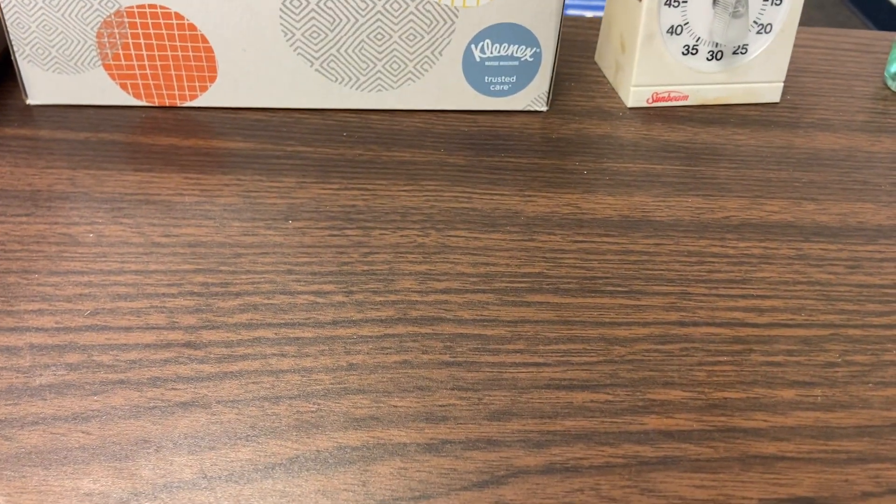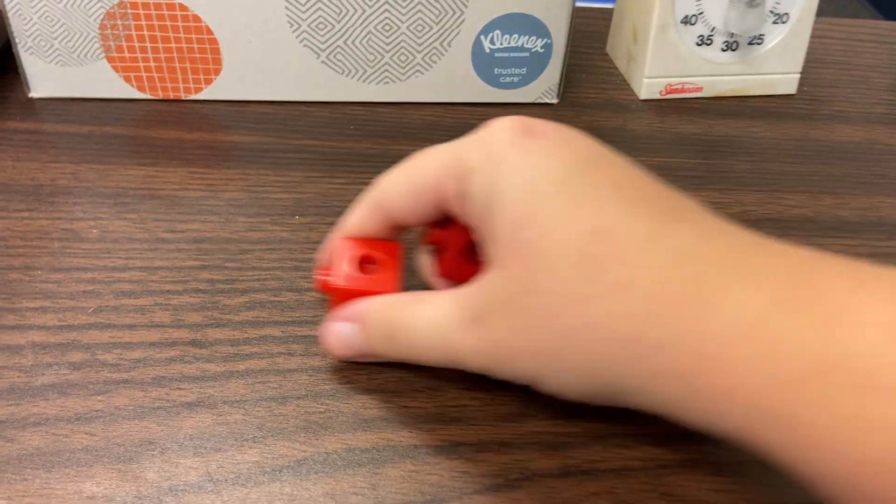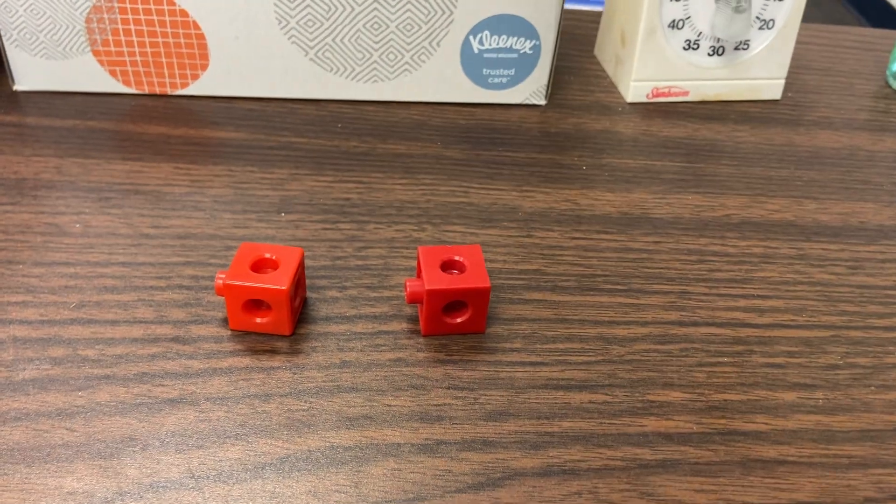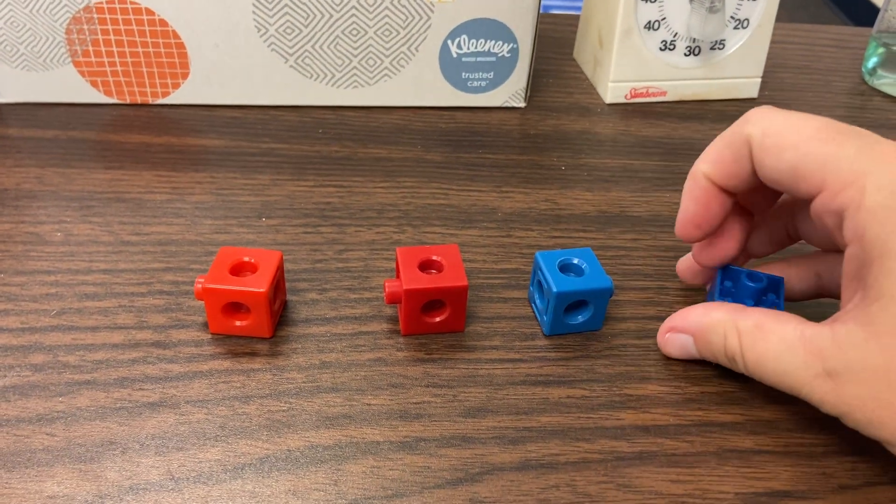Now you're going to take two red squares, one, two, and two blue squares, one, two.